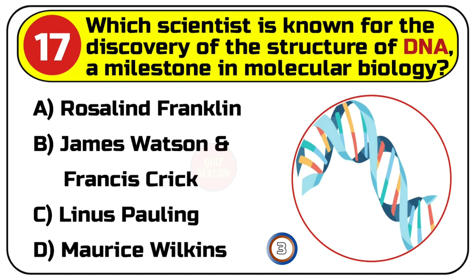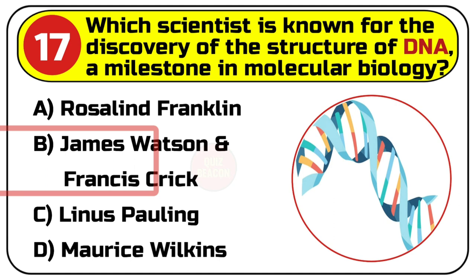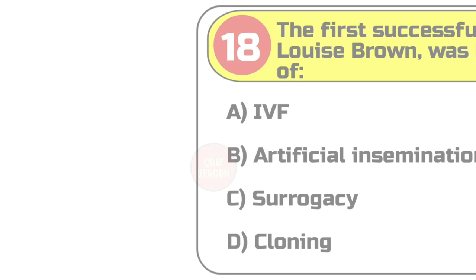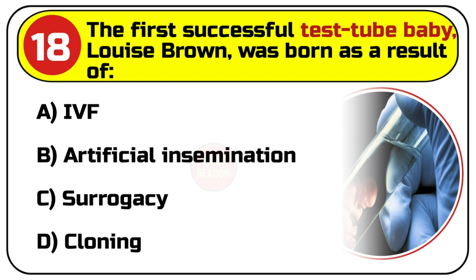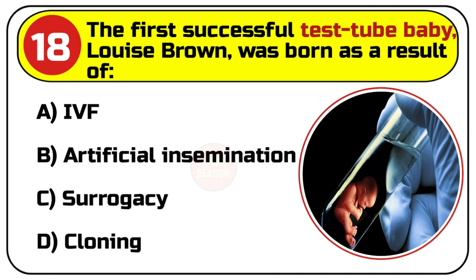Correct answer is B. James Watson and Francis Crick. Question number 18. The first successful test tube baby, Louise Brown, was born as a result of: A. IVF, B. Artificial insemination, C. Surrogacy, D. Cloning.